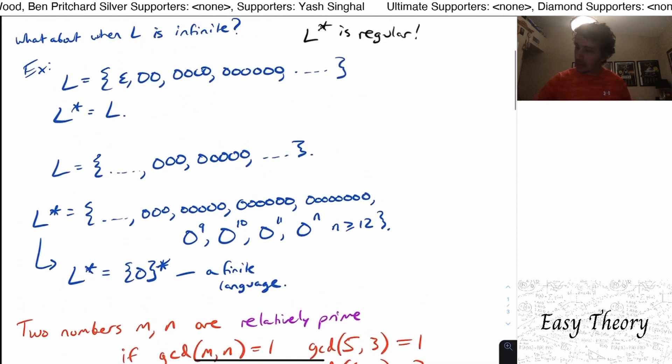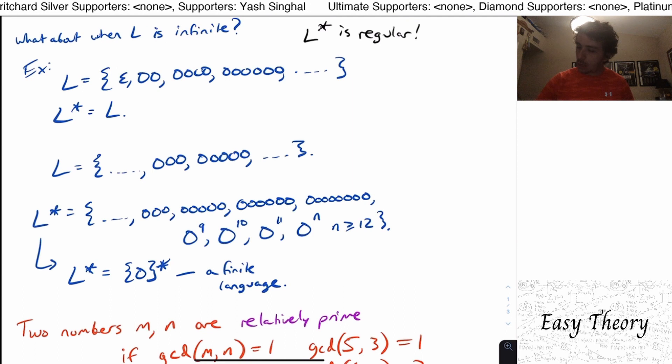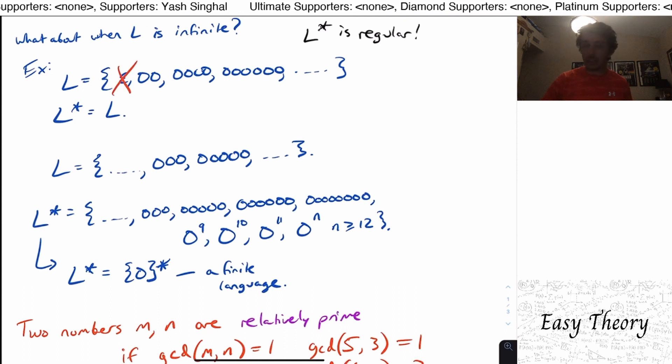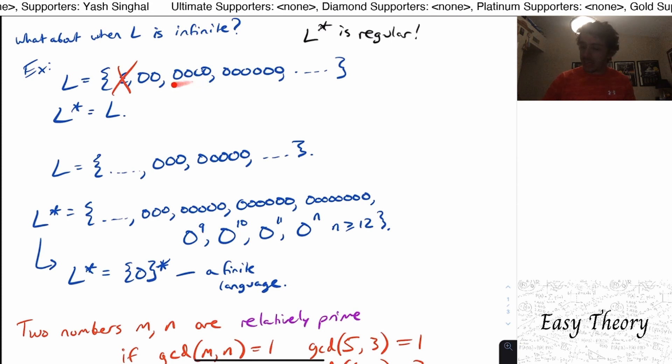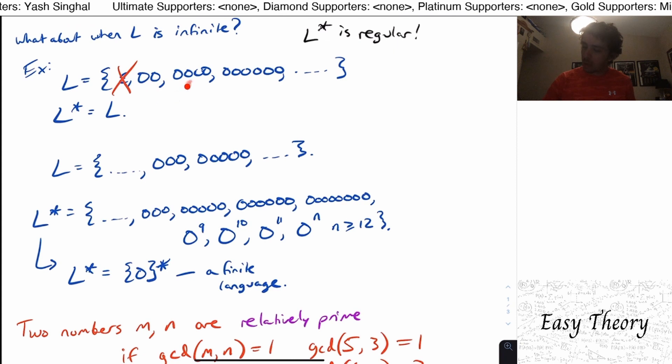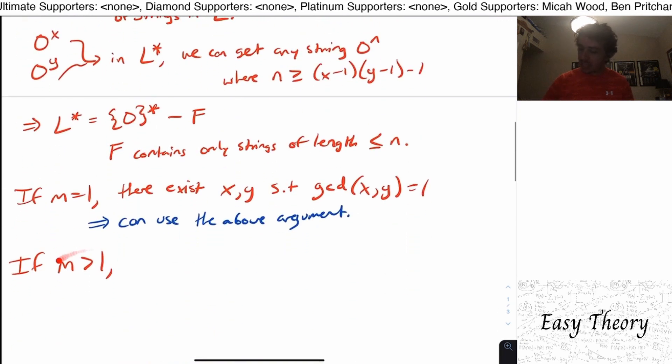So as an example, let's look at the language where we have all even lengths. If I cross out the empty string right here, and I can do that the resulting language is still regular, because it's just even lengths at least two. Well, the greatest common divisor among all these is two.